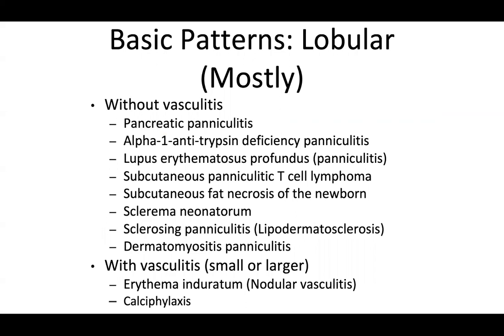The basic patterns of lobular paniculitis — again without and with vasculitis — include most of the paniculitides. Without vasculitis: pancreatic paniculitis, alpha-1 antitrypsin deficiency paniculitis, lupus erythematosus profundus (lupus paniculitis), subcutaneous paniculitis-like T-cell lymphoma (included here for differential purposes), subcutaneous fat necrosis of the newborn, sclerima neonatorum, lipodermatosclerosis (sclerosing paniculitis), and dermatomyositis paniculitis.